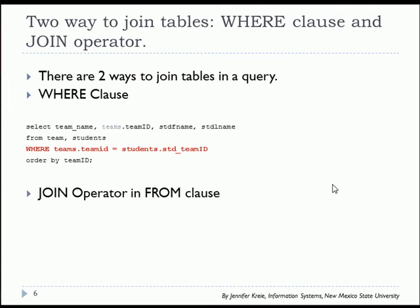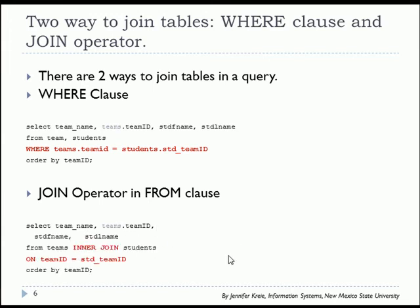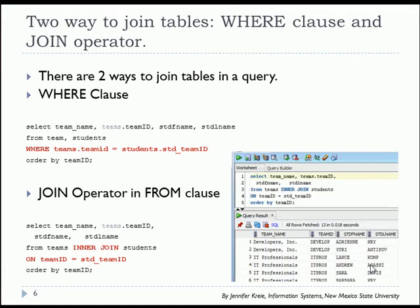The join operator occurs in the from clause. We say from teams join - actually the word inner is optional - teams inner join students and then we use on and specify how those two come together. Team ID equals student team ID. If the name of the columns are identical you will have to precede the column name with the actual table name. Running this code with the from clause and the join operator we get the same results as we would with the where clause.